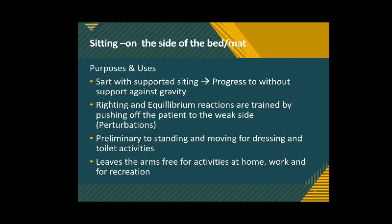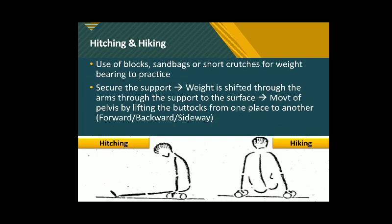Next is hitching and hiking. Once the patient is able to sit in long sitting — where the legs are extended straight on the mat — or in high sitting, where the limbs are hanging over the edge of the bed or mat, the next level of transition or ambulation is hitching and hiking. The patient uses blocks, sandbags, or short crutches as support, which are useful in the initial phase to train weight bearing.